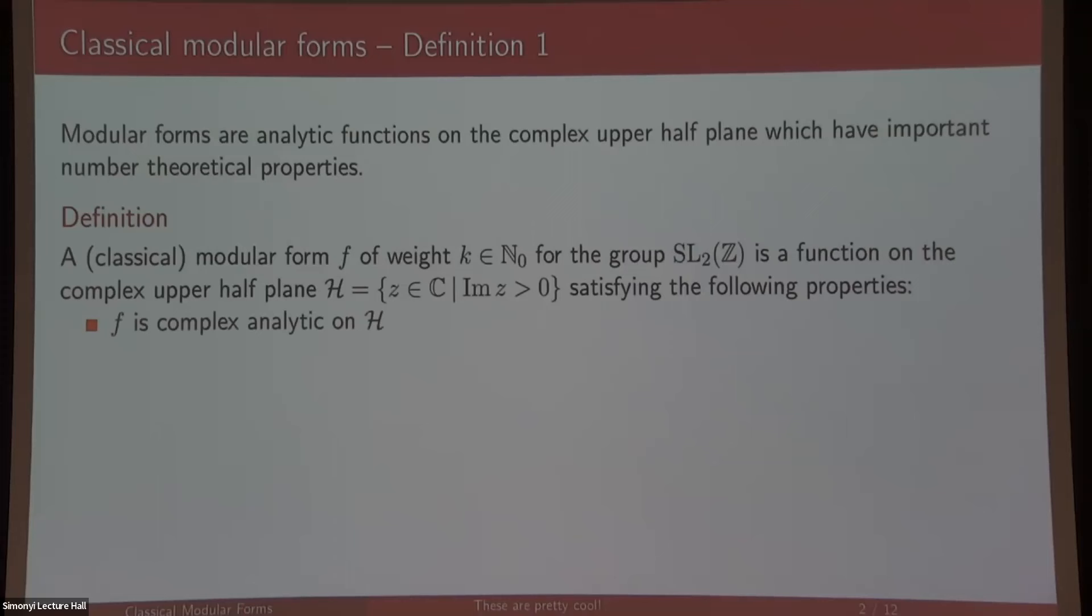It satisfies what looks like a strange condition the first time you see it. So f on a Möbius transform of z is related to f of z in some nice way, and also as the imaginary part of z goes to infinity, your function should be bounded. This leads to many nice properties of these modular forms.